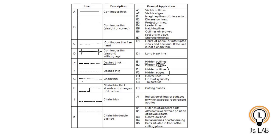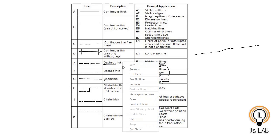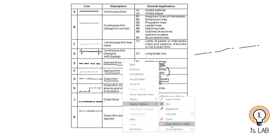The chain thin line — Type G — is used to represent center lines, axes, lines of symmetry, and trajectories. For example, a solid will have an imaginary axis, and that imaginary axis is represented by a thin chain line: long line, short line, long line, short line, and so on.